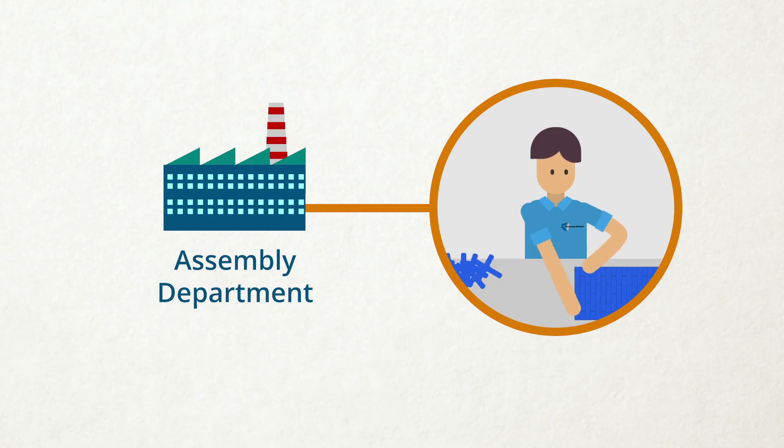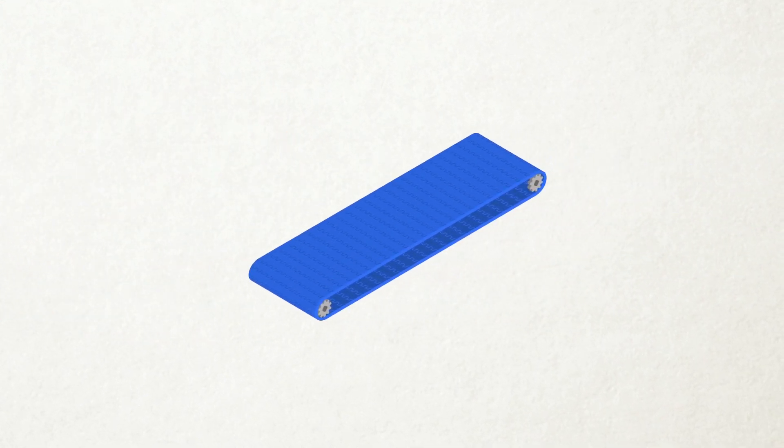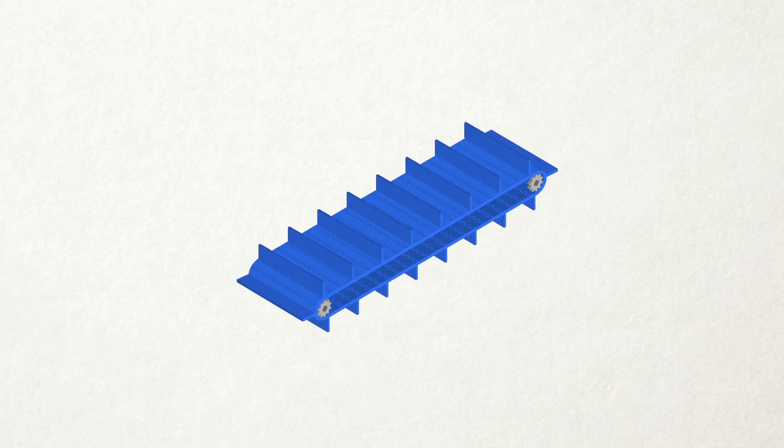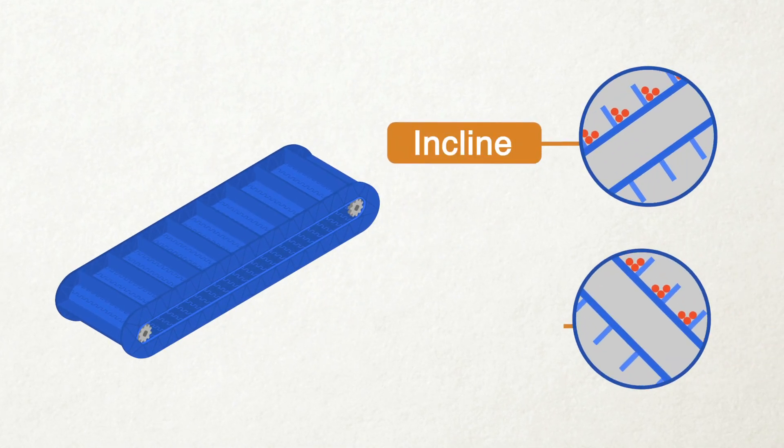In addition to material, size, and surface requirements, the customer may also require accessories such as product supports and side guards. For example, product supports can be used with inclined or declined conveyors.